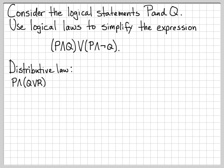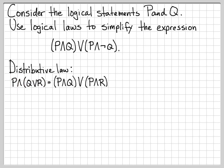The distributive law says that if you have P and (Q or R), you can write that as (P and Q) or (P and R). It's not unlike the multiplication distributive property where we can distribute P across each element of that quantity. That's what we've done here.